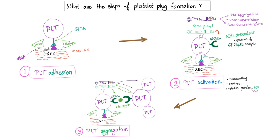A problem with von Willebrand factor is called von Willebrand disease. A problem with GP1B is called Bernard-Soulier disease. A problem with GP2B3A is called Glanzmann thrombasthenia. Please remember that we have a class of medication that inhibits this receptor — it's called GP2B3A antagonists. We also have a group of medications that inhibit the expression of this receptor, called the P2Y12 inhibitors, such as clopidogrel, prasugrel, ticlopidine, and ticagrelor.